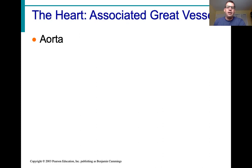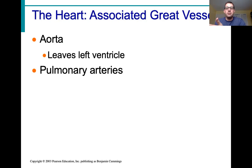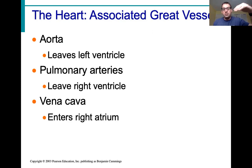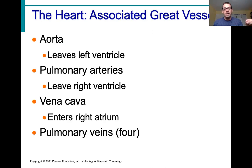There are some major blood vessels called the great vessels associated with the heart. The aorta leaves the left ventricle. The pulmonary trunk leaves the right ventricle and branches into the pulmonary arteries. The vena cava — superior vena cava bringing blood from above the heart, inferior vena cava bringing blood from below — both return blood to the right atrium. And four pulmonary veins, two from each side, enter the left atrium.